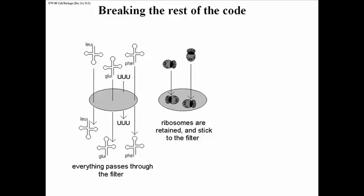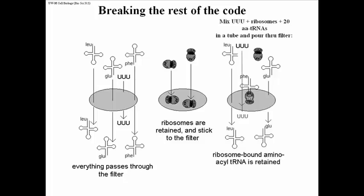He also demonstrated that if he isolated E. coli ribosomes, they would not pass through the filter — they would be retained and stick on the filter. The experiment was then to mix UUU and extracted ribosomes with the 20 different aminoacyl tRNAs. This could actually be done in a single experiment in a single tube, unlike the original synthetic message experiment — you could mix these all together.